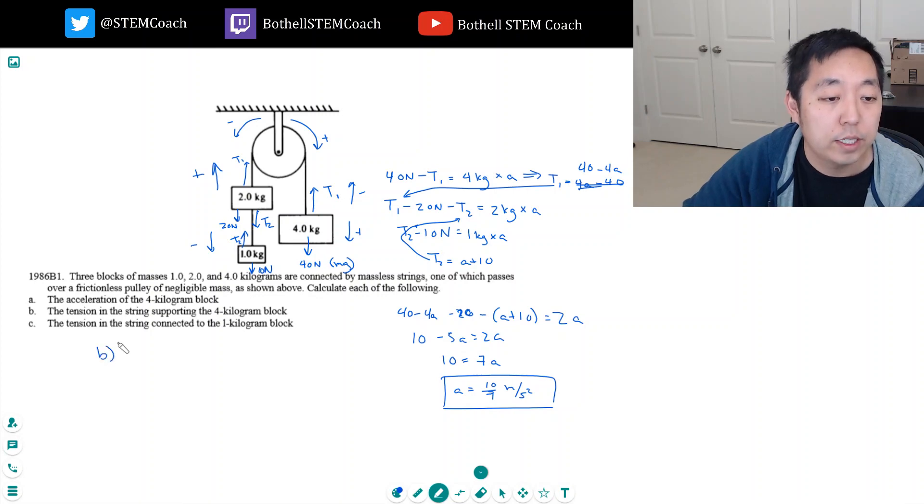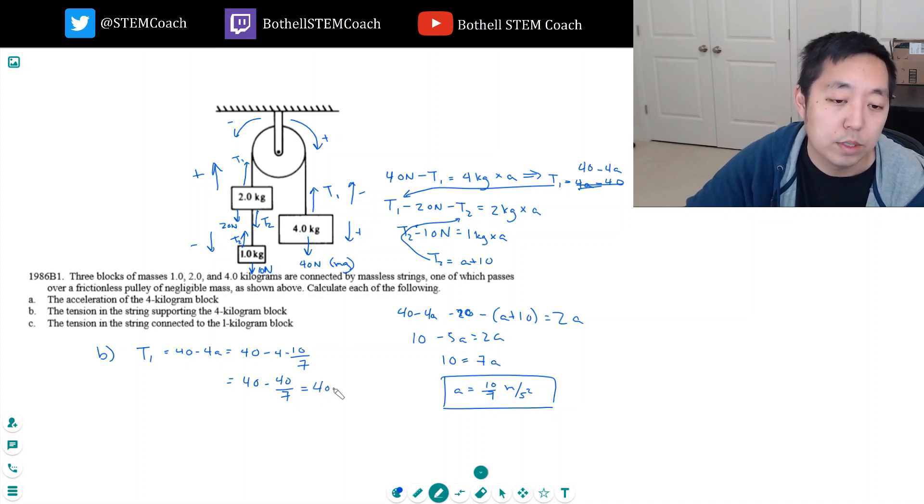The tension supporting the 4 kilogram block, that's T1. T1 is equal to 40 minus 4A. That's 40 minus 4 times 10 over 7. That's equal to 40 minus 40 over 7. That's 40 times 6 sevenths. That's 240 over 7 newtons.